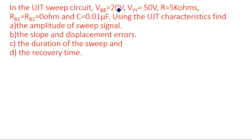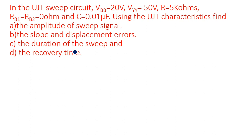Vbb is used for biasing the UJT transistor. R is given as 5 kilo ohms. Rb1 and Rb2 are the two base resistors of the UJT — since UJT has two base terminals B1 and B2 — and both are given as 0 ohms, meaning they are neglected. The capacitor C is given as 0.01 microfarads. Using the UJT characteristics, find the amplitude of the sweep signal, the slope and displacement errors, the duration of the sweep, and the recovery time.